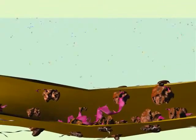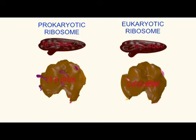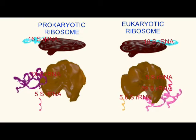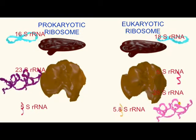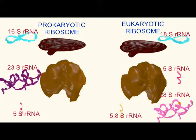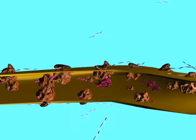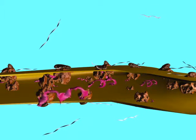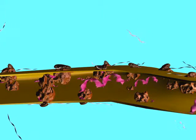In contrast, in eukaryotes, the small subunit is composed of an 18S piece of rRNA, and the large subunit is composed of a 28S, 5.8S, and 5S pieces of rRNA. About 40% of a ribosome is composed of a number of small proteins, which help to maintain the three-dimensional shape of the rRNA.